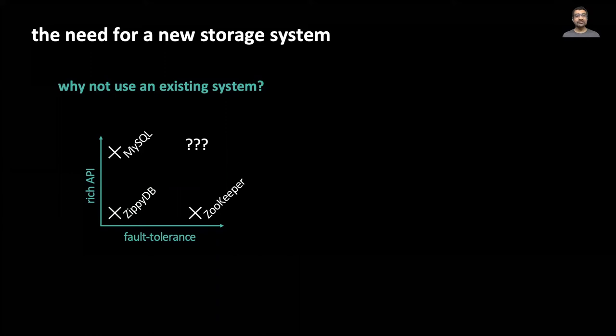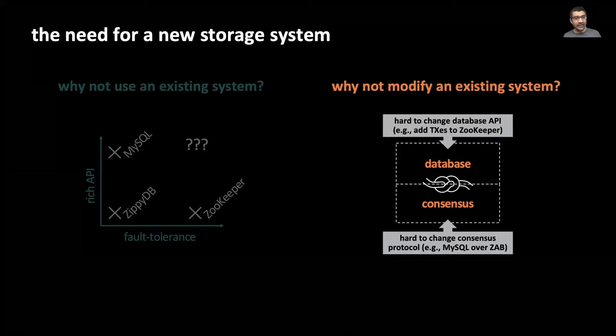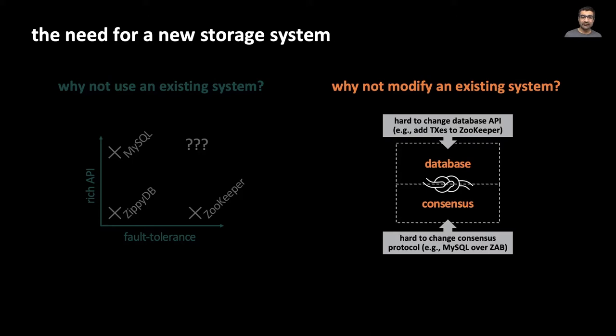In 2017 when we started this project, Facebook stored its control plane state in a combination of three different systems. Unfortunately none of these systems satisfied both requirements. A system like ZooKeeper provides extremely high fault tolerance and zero dependency but has a limited API, whereas MySQL has a highly expressive API but cannot match ZooKeeper's fault tolerance. In addition, modifying one of these systems to satisfy both requirements turned out to be difficult due to the monolithic design of these systems where the database is intertwined with the consensus logic. It's hard to add general purpose transactions to a system like ZooKeeper or to run a custom consensus protocol like ZAB under MySQL.